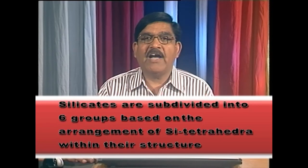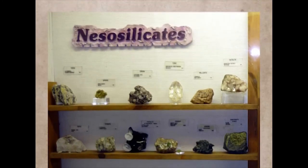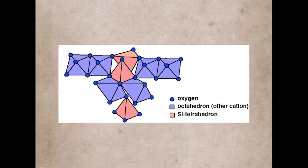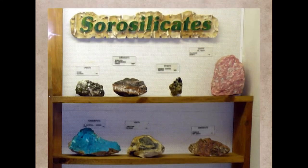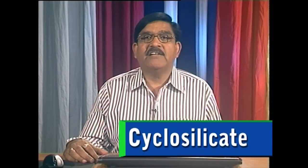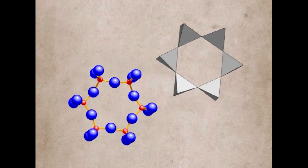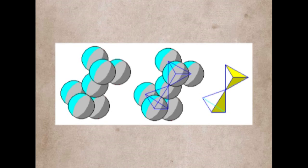Silicates are subdivided into six groups based on the arrangement of silica tetrahedra. First, nesosilicates: Si:O ratio 1:4, single tetrahedra with no oxygen shared between neighboring tetrahedra, joined by bonds with other cations. Second, sorosilicates: Si:O ratio 2:7, two neighboring tetrahedra share one point. Third, cyclosilicates: Si:O ratio 1:3, all tetrahedra share two oxygens each with different neighbors, building three-, four-, or six-membered ring structures.